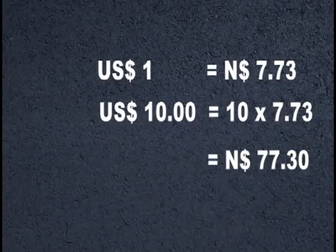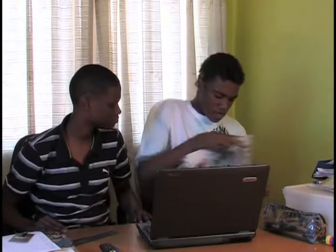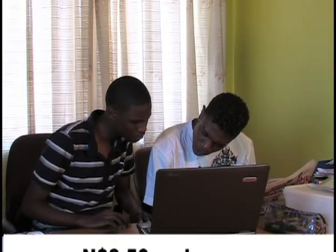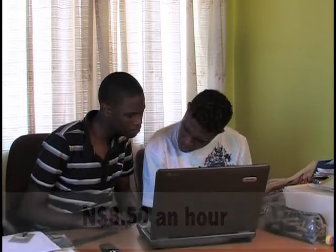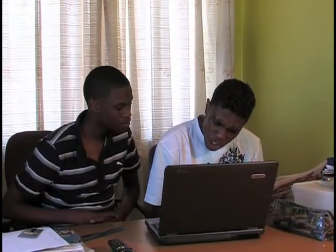But that still doesn't solve our problem — where are we going to get the money from? The only way we're going to get the money, Sam, is if we get ourselves casual jobs. Casual jobs? How much do they pay? Let's see if there are any jobs in the newspaper. Here's a job in a clothing store. They pay $8.50, and overtime is $10.50. That sounds like good money to me. So if you work 8 hours normal time over the weekend and 5 hours overtime, you can make quite a bit. Let's work it out — how much can you earn in such a weekend?